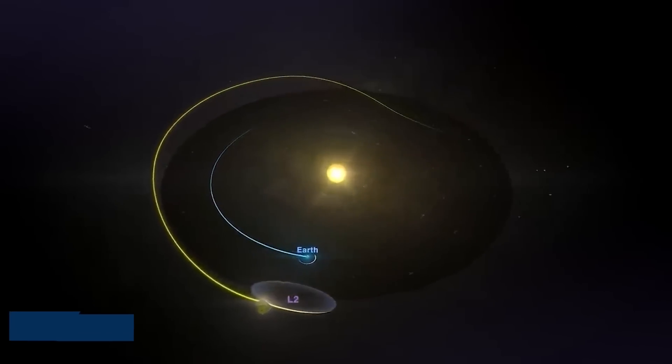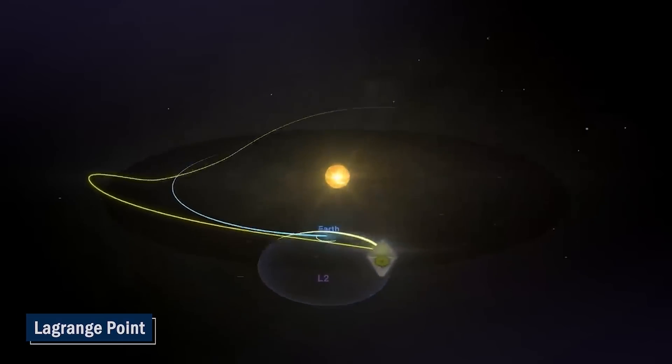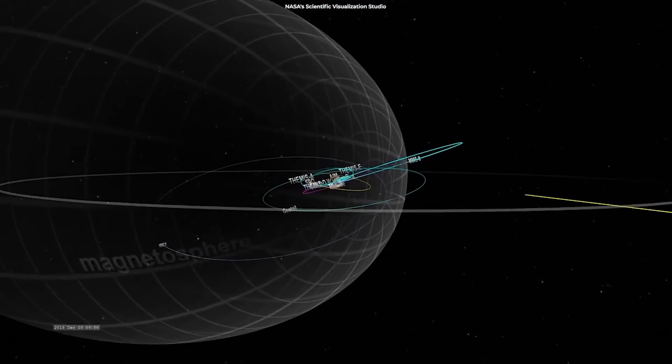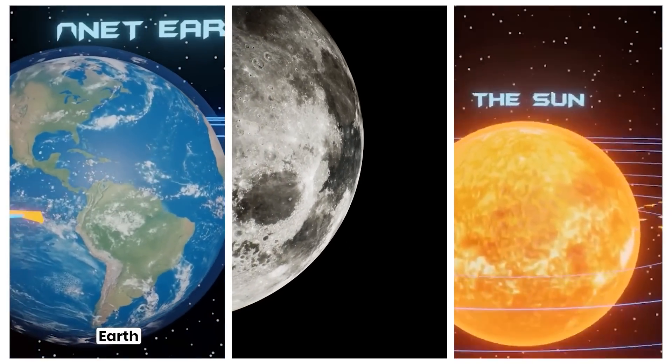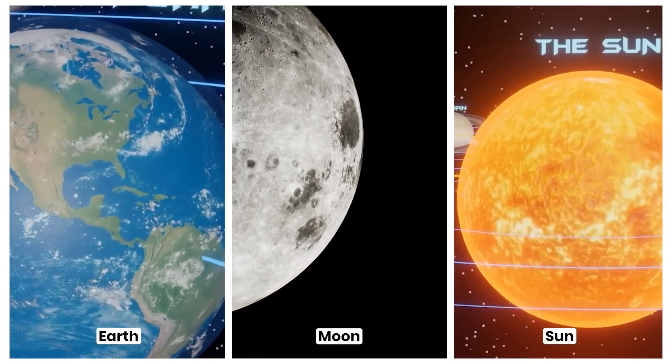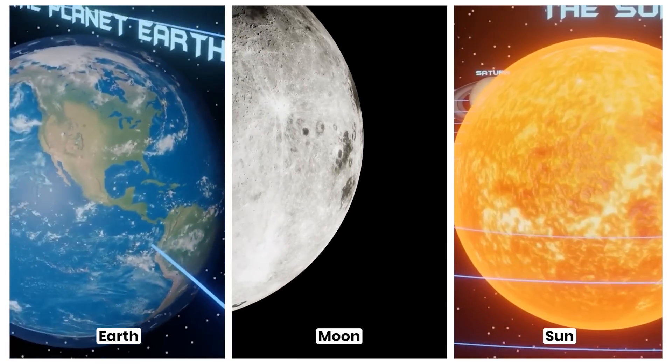But what exactly is the Lagrange Point? Bill Nye has a great way of explaining it. It's a special spot in space, beyond Earth and the Earth-Moon system, where the gravitational forces of the Earth, Moon and Sun, along with the centripetal acceleration of everything orbiting the Sun, are perfectly balanced.